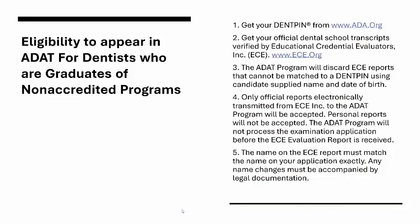Now, what is the eligibility to appear in the ADAT exam for dentists who are graduates of non-accredited programs? First, you have to go to ADA.org and apply for the Dent PIN at www.ada.org/dent-pin, then register yourself. The Dent PIN will be your identification with the American Dental Association for the rest of your life, so save your Dent PIN and the password you create when applying.